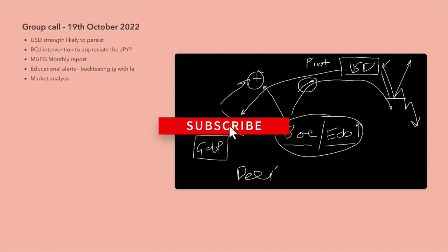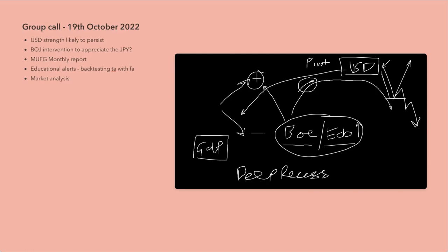This is where you will have narrative changes. Because all of a sudden it will go from who is best placed in a hiking cycle to who is going to avoid a deep recession and who is going to have a shallow recession. That's what you're going to end up with. As the dollar starts to pull back due to some sort of profit taking and everyone falling into the narrative of dovish pivot.